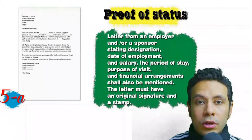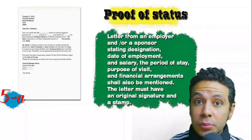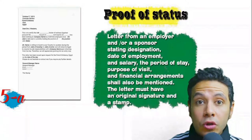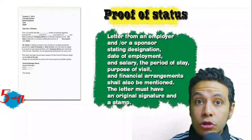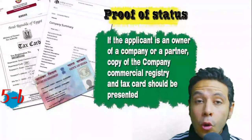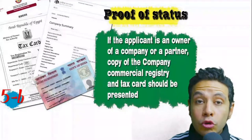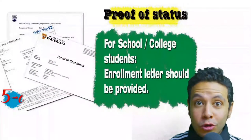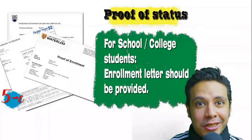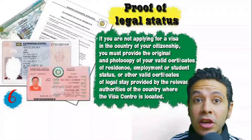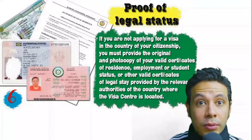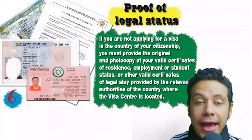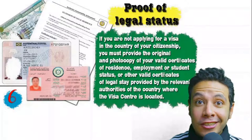In most visa application processes, you will be required to provide a proof of status. If you are an employee, provide a letter from your employer or HR department mentioning your name, work details, salary, address, and contact numbers — with an original signature and stamp. If you own a business, your commercial registry and tax card must be presented. If you are a student, an enrollment letter from your university or school is required. If applying from a country different than your own, you need to provide a proof of legal residence.